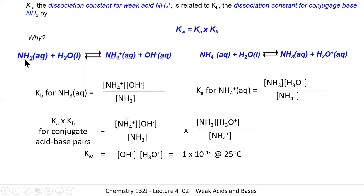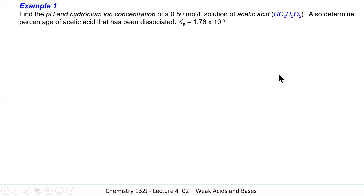If you are given the Ka for ammonium ion, you can calculate the Kb for ammonia. We simply give either the Ka of the weak acid or the Kb of the weak base, and use Kw = 1×10⁻¹⁴ to calculate the other. If I want Ka given Kb, then Ka = Kw / Kb. If I want Kb given Ka, then Kb = Kw / Ka.